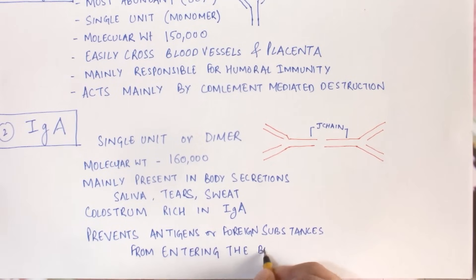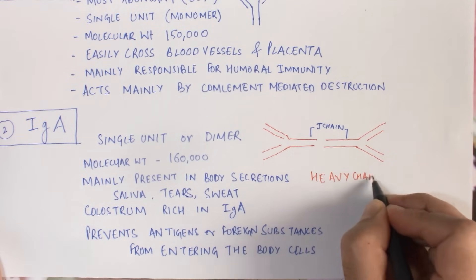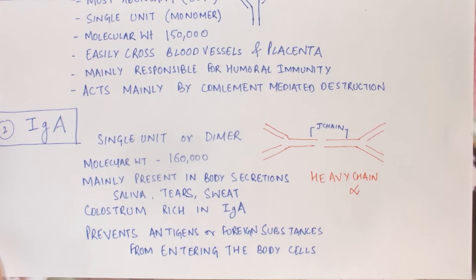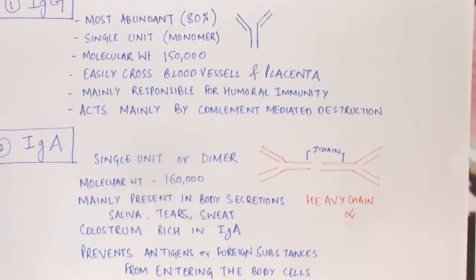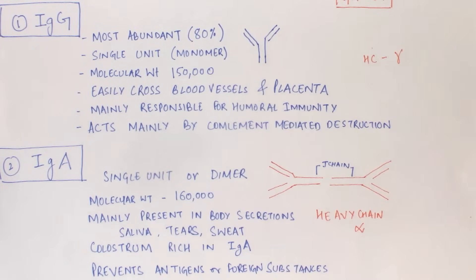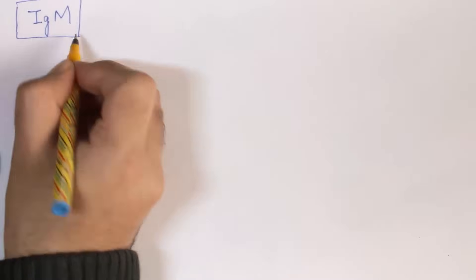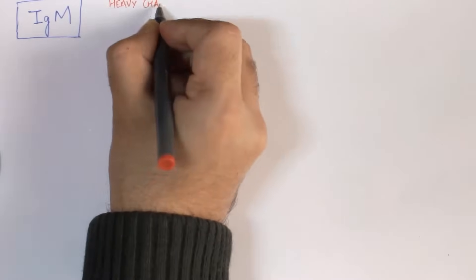Since IgA is present in various secretions, it prevents various types of antigens from entering the cells of the human body. IgA consists of the heavy chain alpha type. IgG consists of the heavy chain gamma type. The light chains in these antibodies are either of the kappa or lambda type.